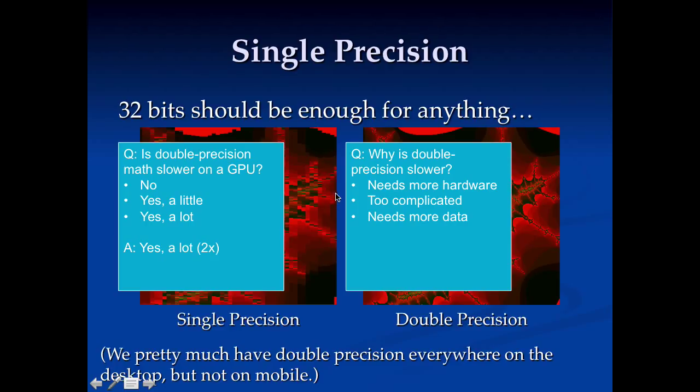Here's another question. Why is double precision slower? Well, I kind of gave away part of the answer there. You do need more hardware, but a big part of this is you need more data.